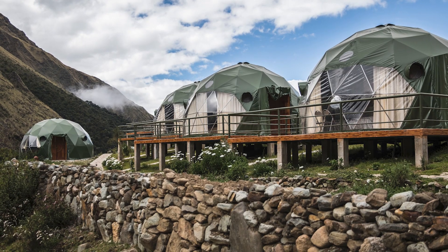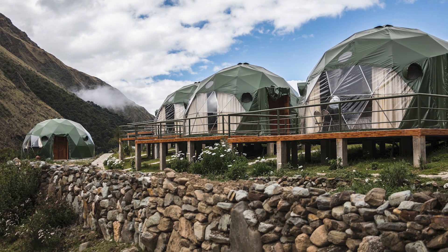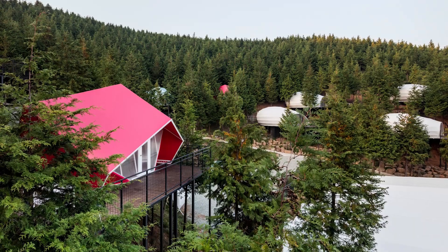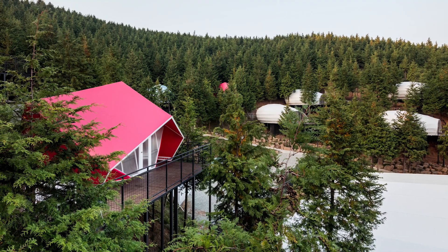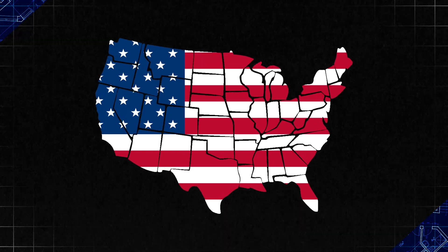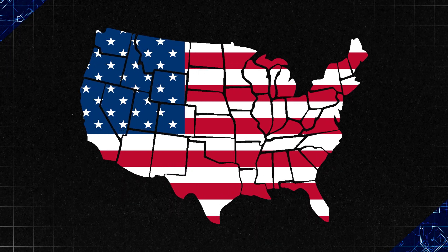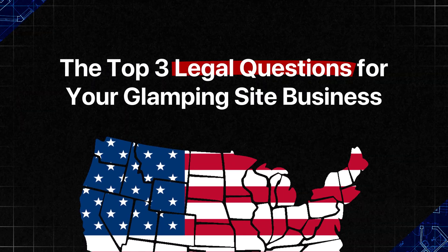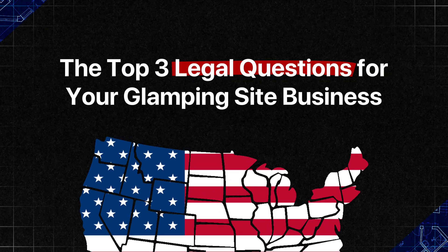Glamping sites, whether you're putting up off-grid tents or building tiny cabins, touch various aspects of the law. This can include zoning, permitting, building codes, health codes, and there may be others. This can vary by location, but there should be some commonalities, and that's what I'm going to focus on in today's video.